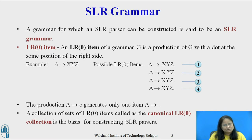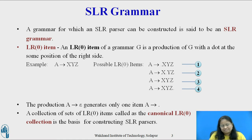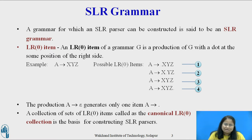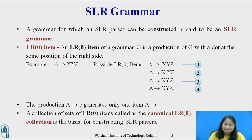A collection of sets of LR0 items is called the canonical LR0 collection, and it is also a basis for constructing an SLR parser. To construct the canonical LR0 items, we define the augmented grammar and two functions: closure and goto.